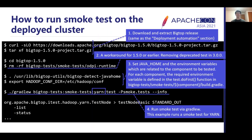To run the smoke test, follow these steps. First, download and expand the Big Top release tarball — it's the same file used in cluster deployment. The second step removes an obsolete test duplicated in Big Top version 3, because that test depends on a third-party library no longer published in its original repository, so the GradleW command will fail without this step. The third step is setting environment variables required for the test. Each smoke test requires different variables — for example, Spark needs SPARK_HOME and Kafka needs KAFKA_HOME. Check the build.gradle file for each component to know what variable is needed.